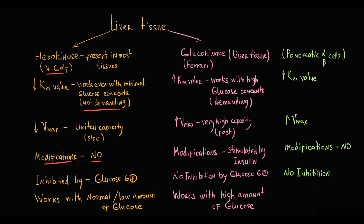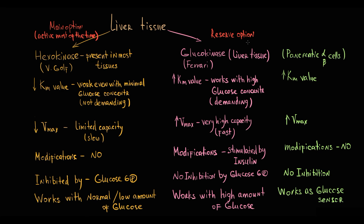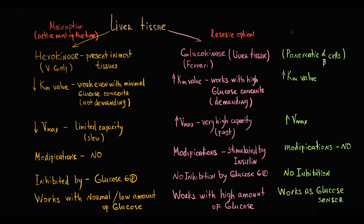In pancreatic tissue, glucokinase functions as a glucose sensor. So to summarize: hexokinase is a casual glucose-phosphorylating enzyme that is active most of the time. Glucokinase is a very fast reserve enzyme that becomes activated when a high amount of glucose enters the cell, and glucokinase also serves as a glucose sensor in pancreatic beta and alpha cells.